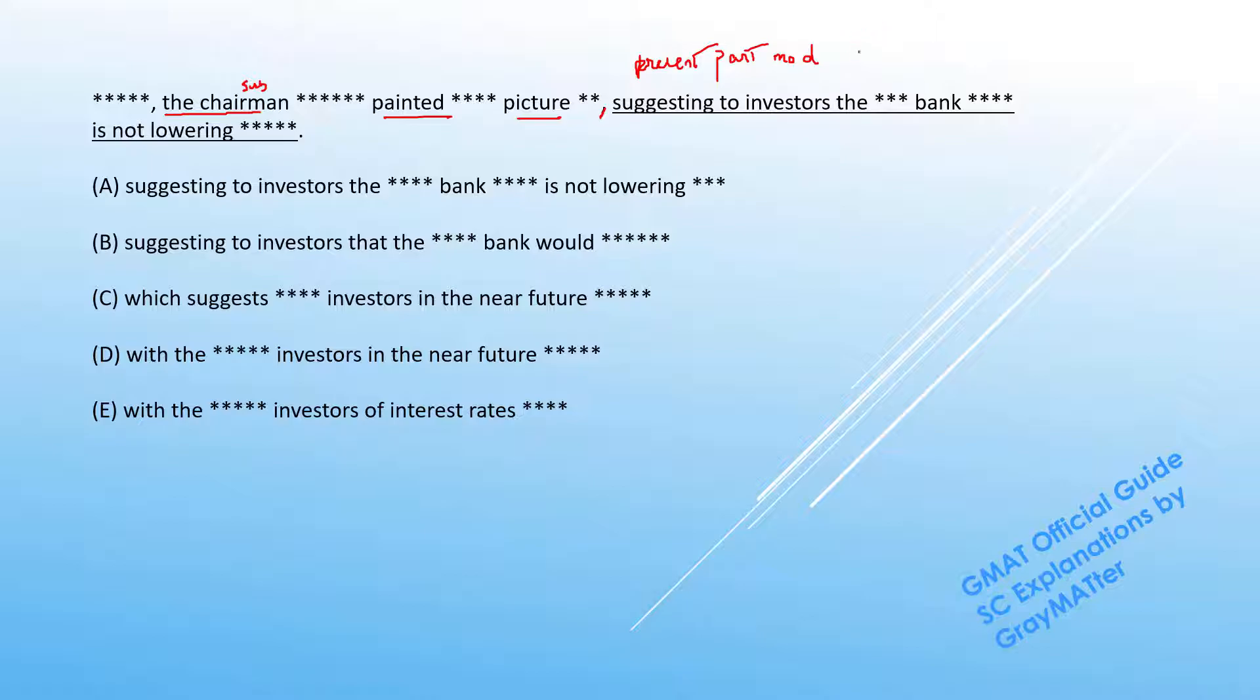So how does this function? Well it functions to modify the entire clause in front of it, and grammatically the "suggesting" will apply to the subject, the chairman.